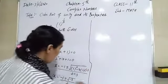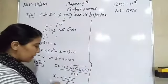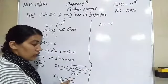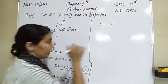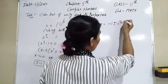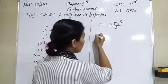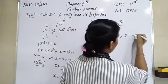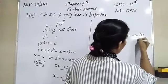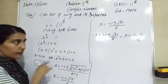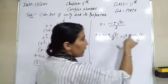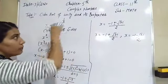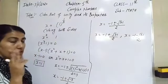We have x = 1 from the first factor. From the quadratic, √(−3) can be written as √3·i, so the other values are x = (−1 + √3·i) / 2 and x = (−1 − √3·i) / 2. So the three cube roots of unity are: 1, (−1 + √3·i)/2, and (−1 − √3·i)/2.